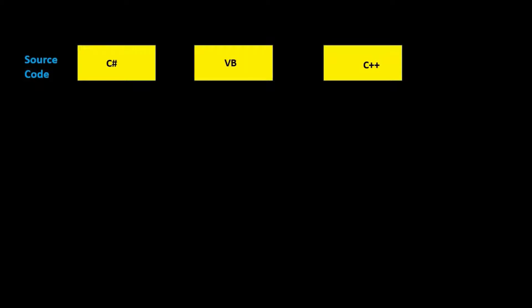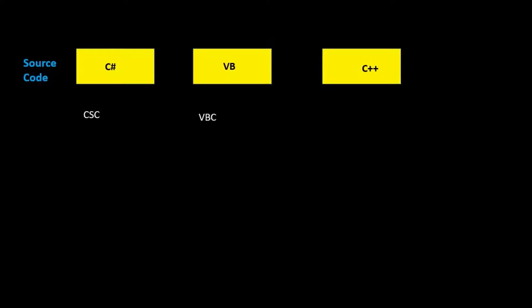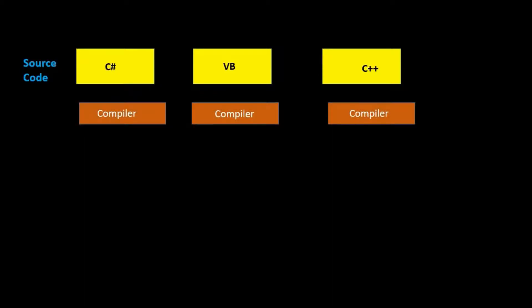For example, C# has compiler CSC, and VB.NET has compiler VBC. Thus each language has a specific compiler, and that compiler compiles the code.